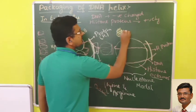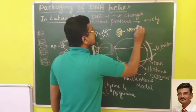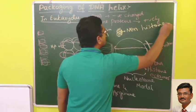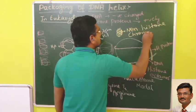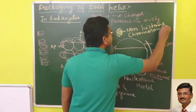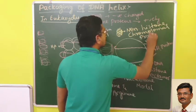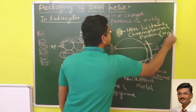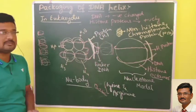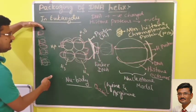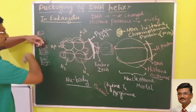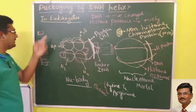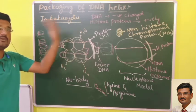Further super coiling of the nucleosomes is assisted by non-histone chromosomal proteins, abbreviated as NHCP. These proteins help the nucleosomes undergo super coiling to produce more condensed chromatin.